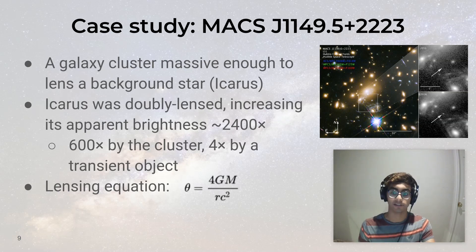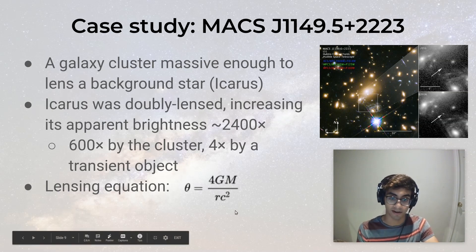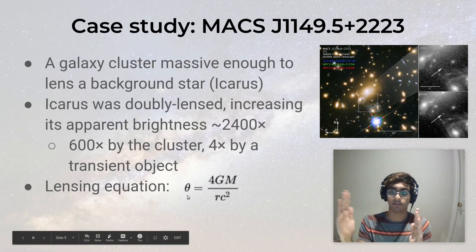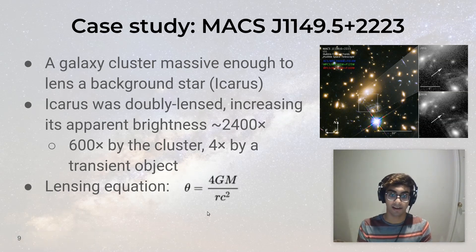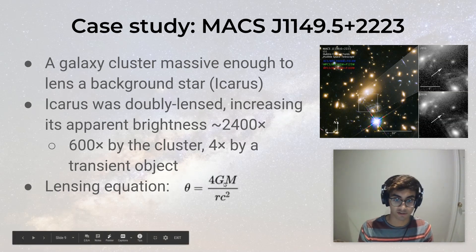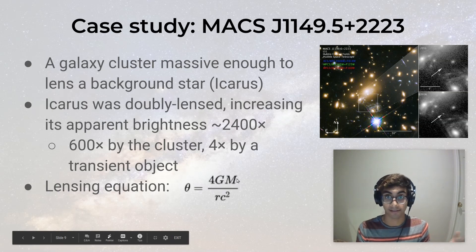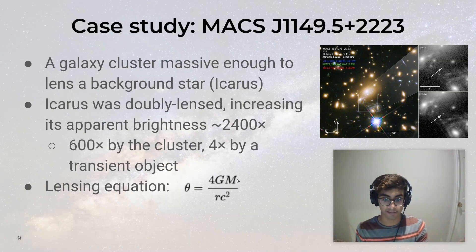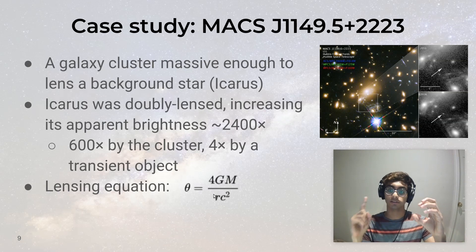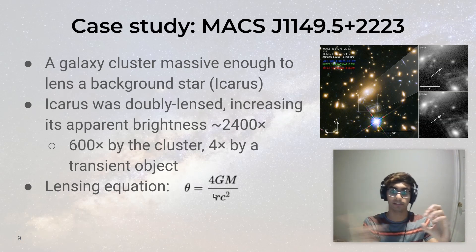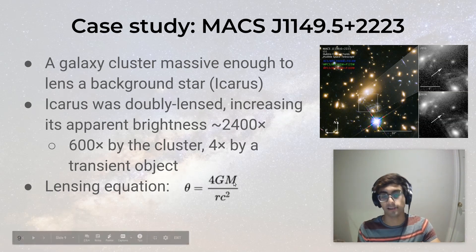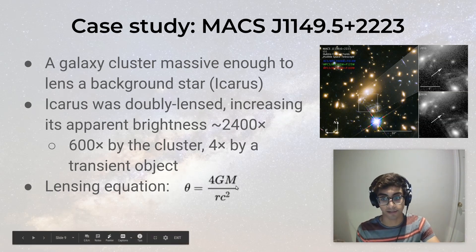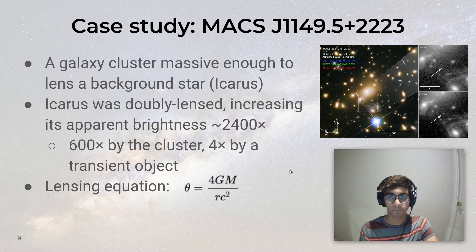Some calculations you might be expected to do regarding lensing involve this equation — basically the amount that the light has been deflected. G is Newton's gravitational constant, M is the mass of the object doing the deflecting, R is how close that photon passes by the object, and C is the speed of light.